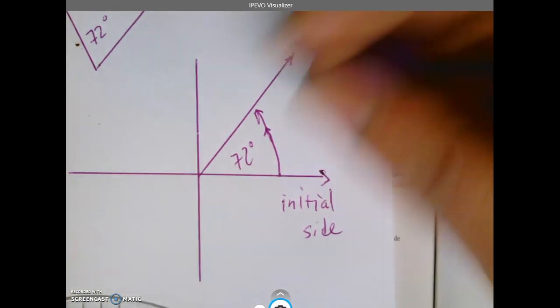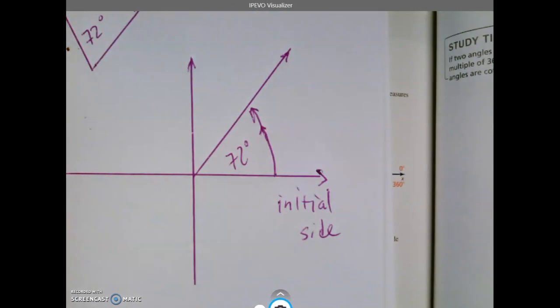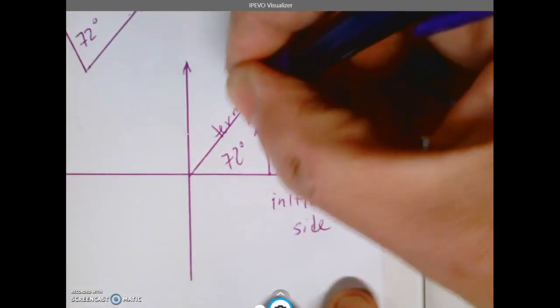If you don't have a protractor, don't worry, you can download one or print one out. The main thing is know that straight up is 90, so this would be 90. So 72 is a little bit less than that. Okay, so that's the initial side. This is called the terminal side.